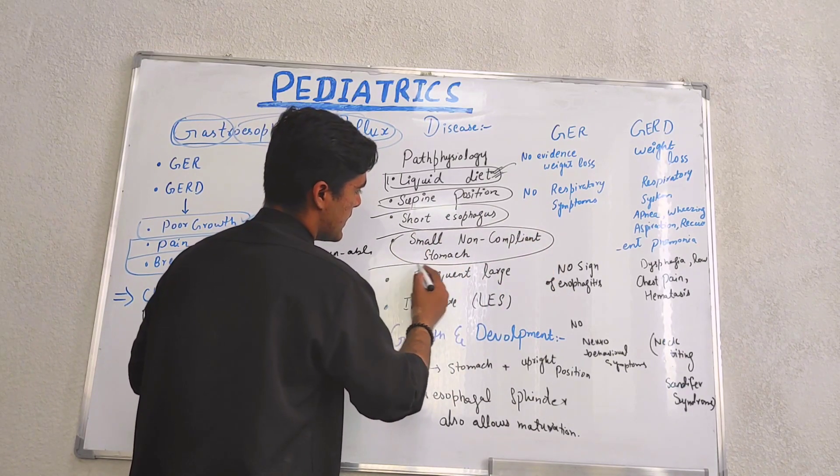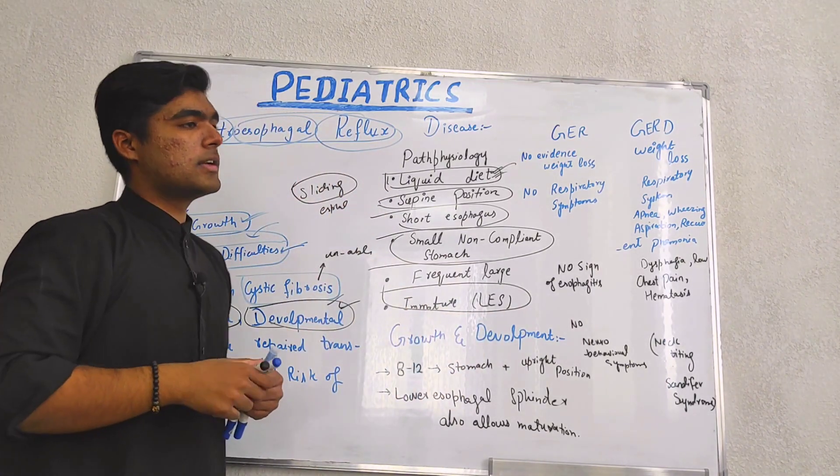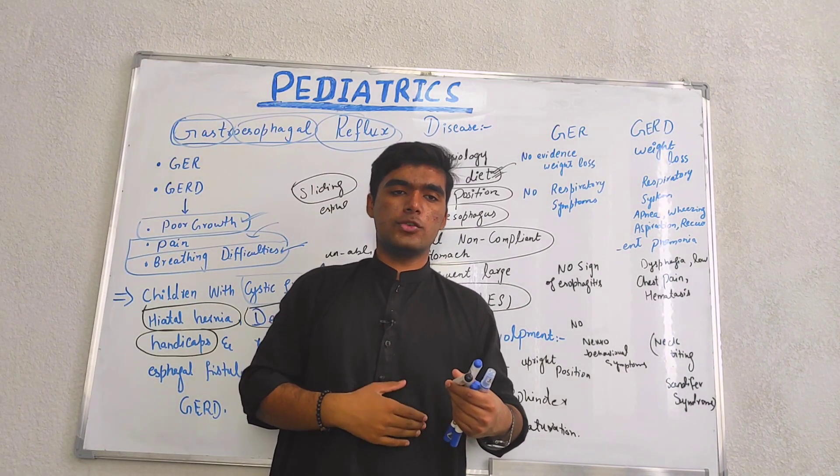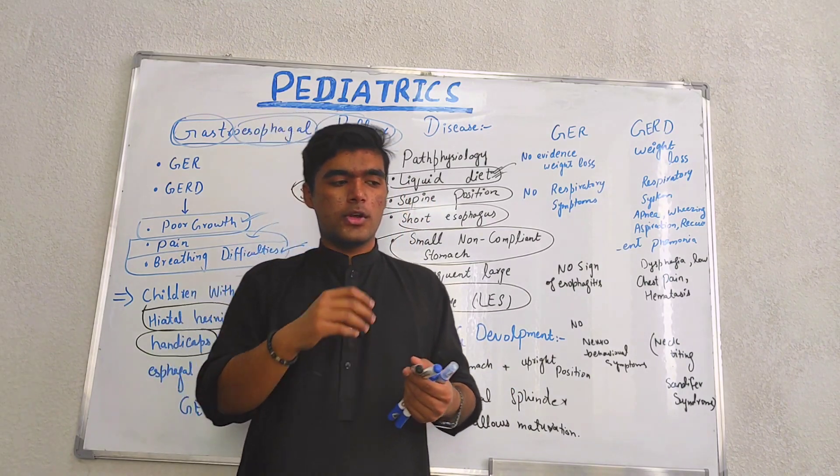These are the pathophysiological symptoms: supine position, short esophagus, small stomach, and immature lower esophageal sphincter in children.